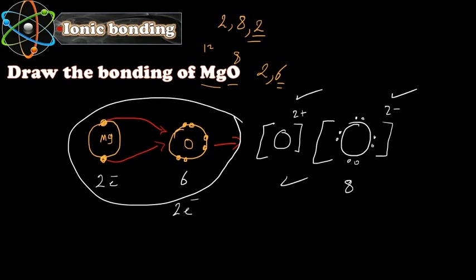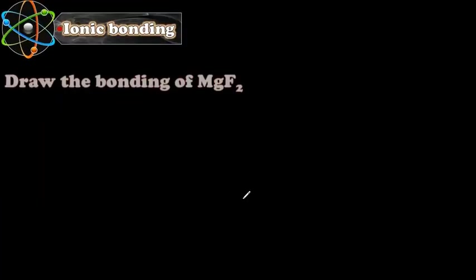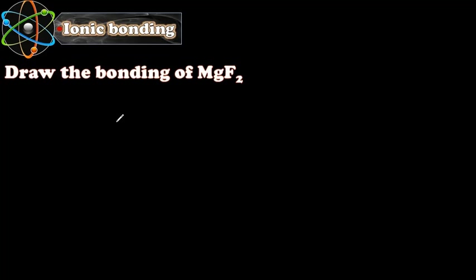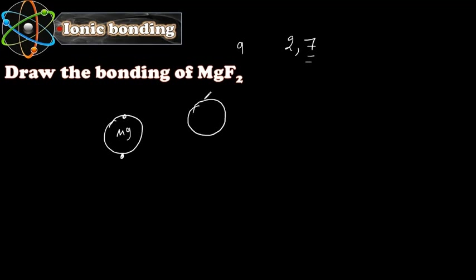Let's look at another example to practice more: magnesium fluoride. Magnesium, as we saw before, has two valence electrons. Fluorine has nine electrons total, so its configuration is 2,7 — meaning seven electrons in the last shell. This fluorine atom can only take one electron because it has seven and needs only one more to reach eight valence electrons.